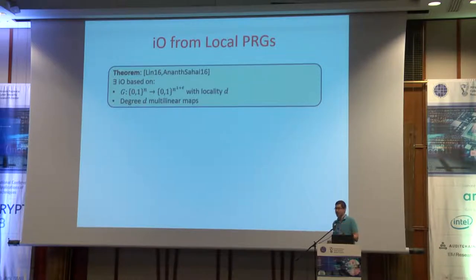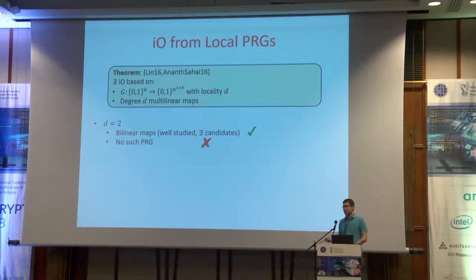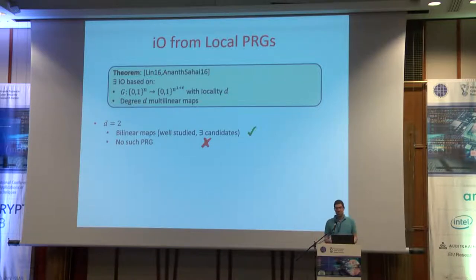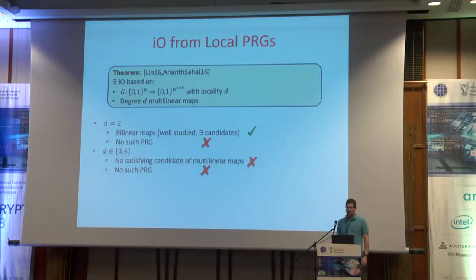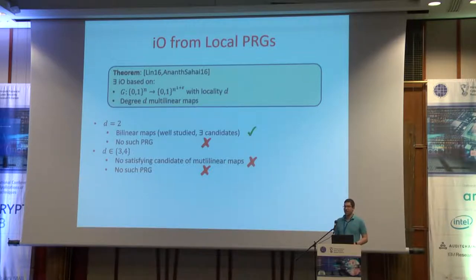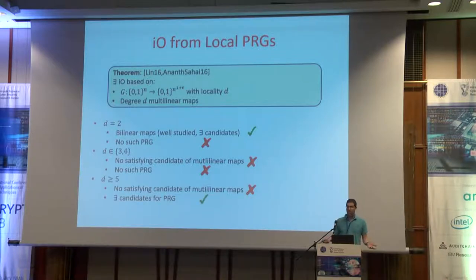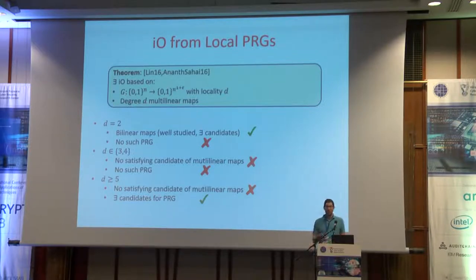Let's see the implications. If we plug in D equals 2: we have bilinear maps and candidates we believe are secure — but unfortunately there's no PRG with the required stretch. What about D equals 3 or 4? The situation is even worse: not only is there no such PRG, but we also don't have satisfying candidate multilinear maps of degree 3 or 4. So we have to go to D equals 5 — and even there, we don't have candidate multilinear maps, though we do have PRGs. So the situation is not so good.